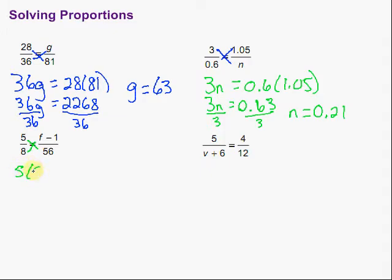So we have 5 times 56 is equal to 8. Now, it's very important that if there's more than one term here, we need to put that in parentheses. And then we're going to have to distribute that 8 through, because it's 8 times this whole thing, not just 8 times the f. That's probably one of the most common errors that I see is that people just want to multiply the f.